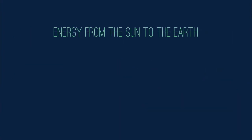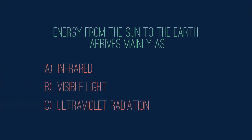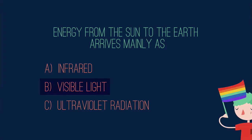So let's try another question. Energy from the sun to the earth arrives mainly as infrared or heat radiation, visible light, or ultraviolet radiation. Pause the video and think of your answer. Well, most of the energy we get from the sun comes to us as visible light. Did you get that right?